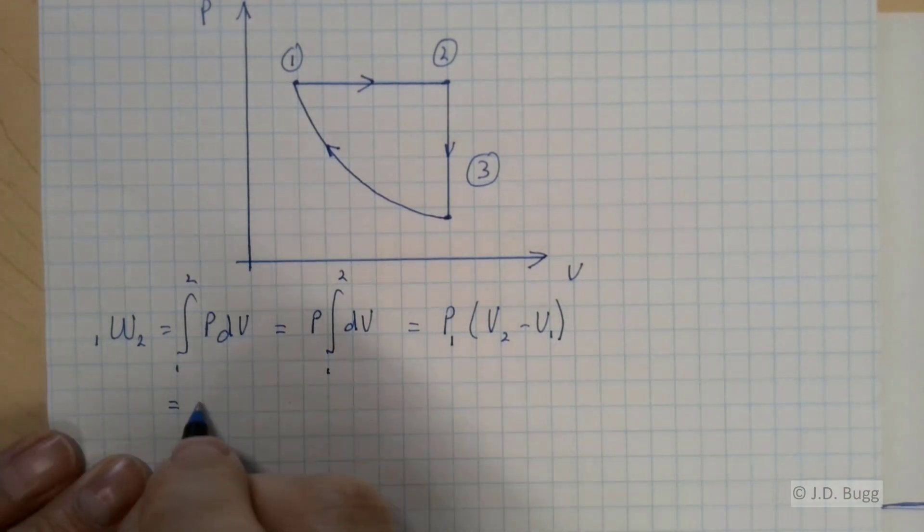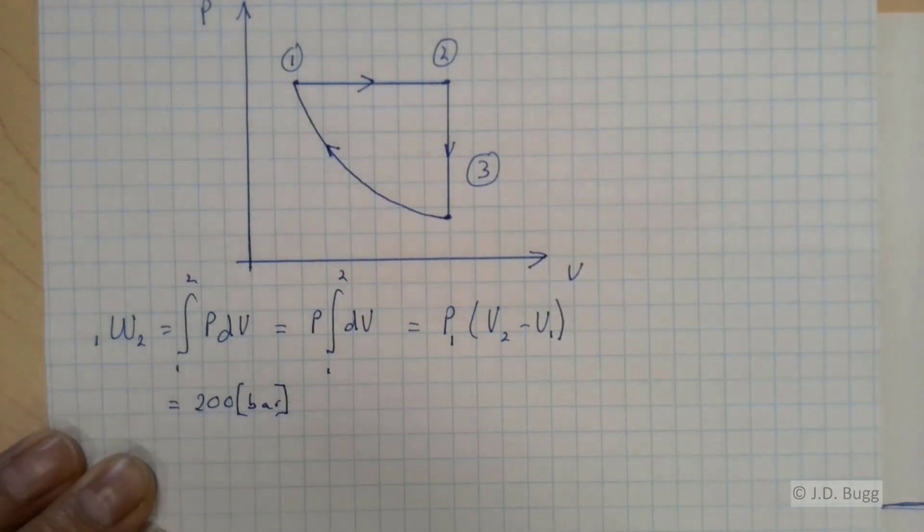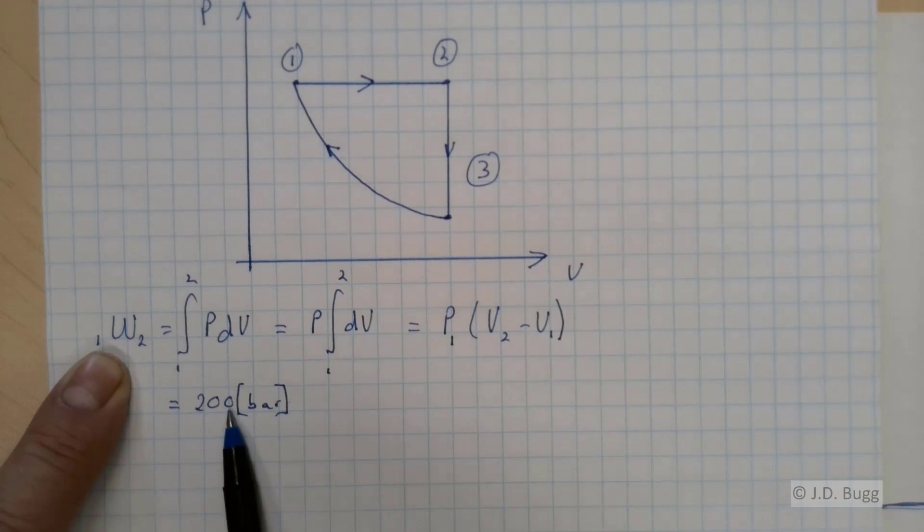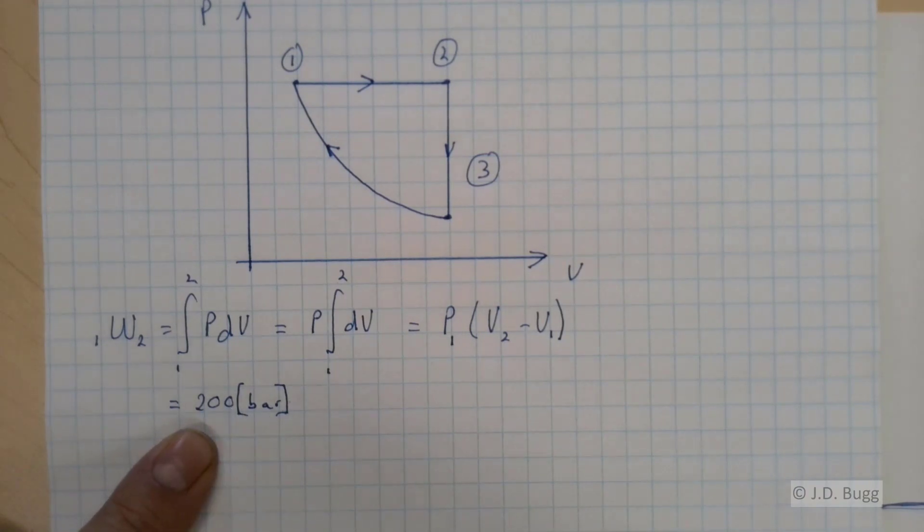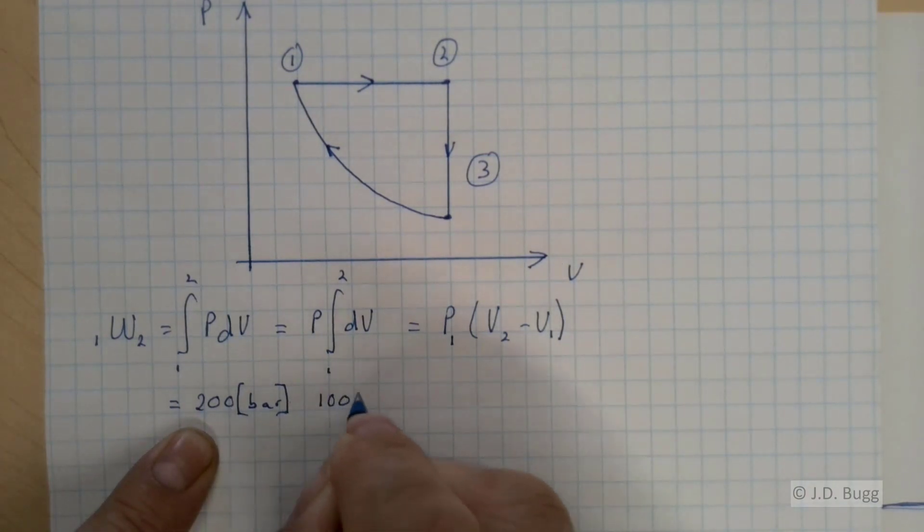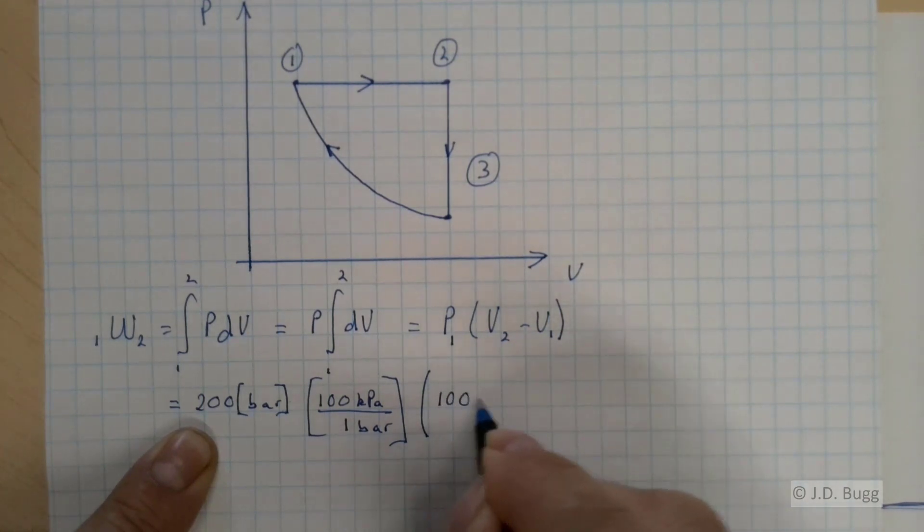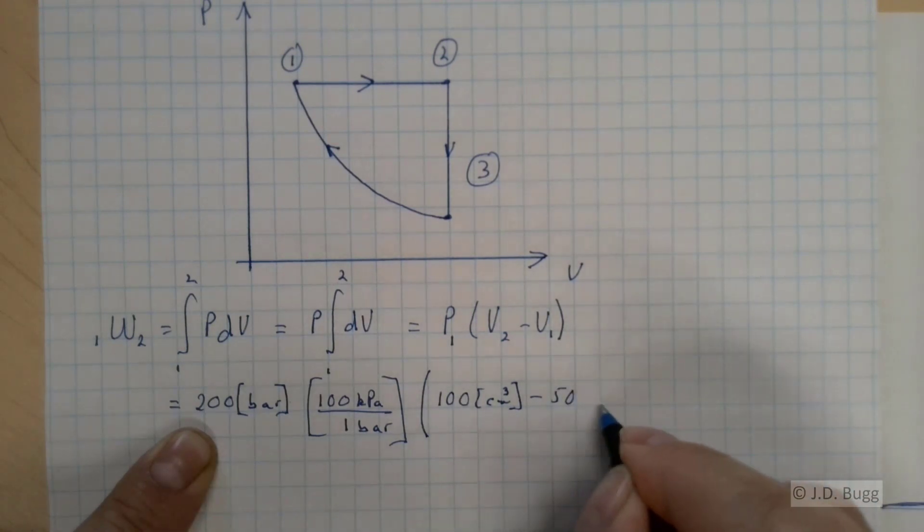So we can go ahead and calculate this work right away. So that P1 was 200 bar. Now here's where we need to be a little bit careful. In order for our work units to work out to kilojoules, which is what we want, we can't use a pressure in bar here. We need to convert this to kilopascals. There are 100 kilopascals in one bar. So multiplying this by 100, we'll get it in kilopascals.